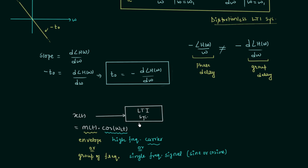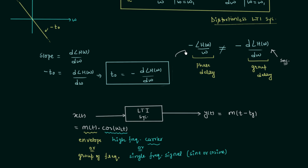Now we will see what happens to the output if the system provides some delay. The output y(t) contains M(t) delayed by the group delay Tg, where Tg is the delay provided to the envelope — the part having multiple frequencies. The group delay equals the negative of the first derivative of the phase of the transfer function with respect to ω, and its unit is seconds. The system also provides a delay to the high-frequency carrier cos(ωct), and the delay provided to the carrier is the phase delay Tp.